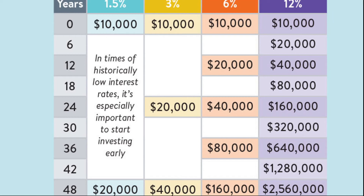The Rule of 72 offers a useful shortcut — it's a simplified version of a logarithmic calculation involving complex functions like taking the natural log of numbers. The rule applies to the exponential growth of an investment based on a compounded rate of return.